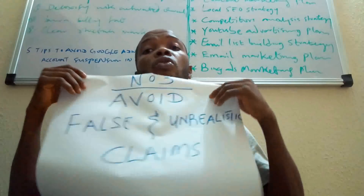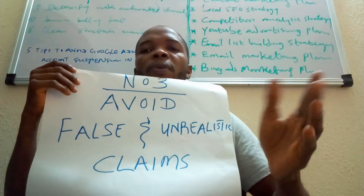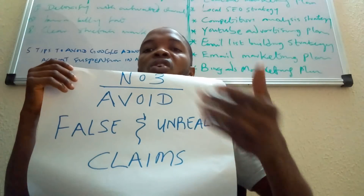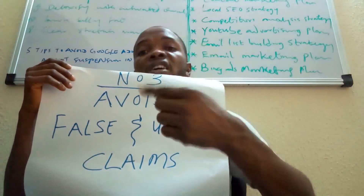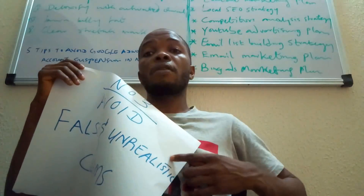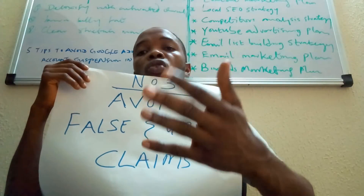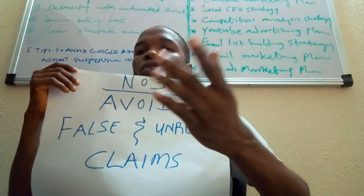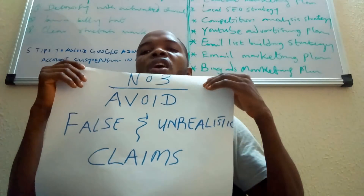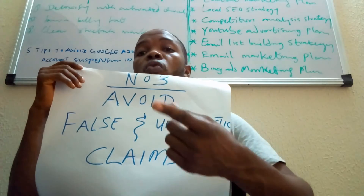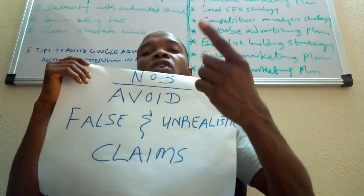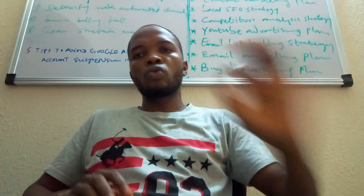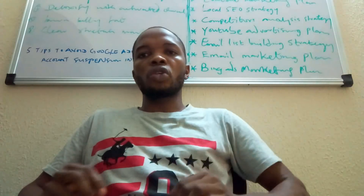Tip number three: avoid false and unrealistic claims. A lot of people do this all the time. Some claims are unrealistic, and if you are advertising a product using these types of unrealistic claims, Google will definitely flag that. Instead of using unrealistic claims, it is better to have all the information on your landing page very transparent so that users understand what the product is all about. Having false or unrealistic claims on your landing page will definitely lead to account suspension or ad disapproval, as it is one of the most egregious policy violations.